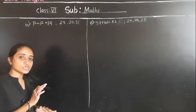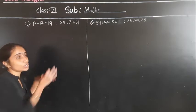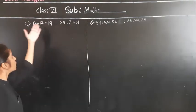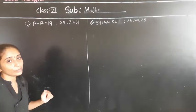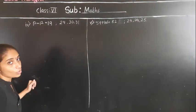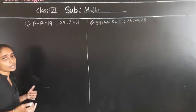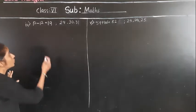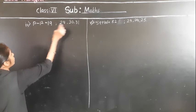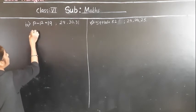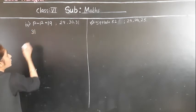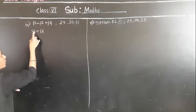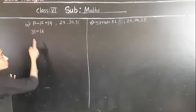By observation only we can say, no need to try each and every number. 31 minus 12 is equal to 19. So in the place of P I will put 31: 31 minus 12. Since 1 minus 2 is not possible, we take a borrow.